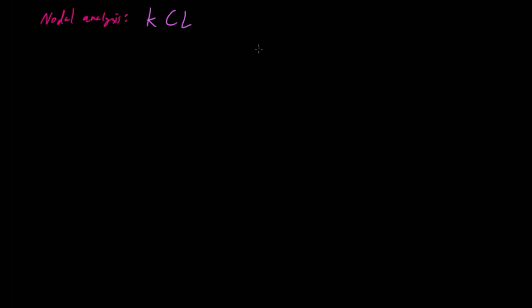What KCL says is that the sum of all the currents entering a node has to be zero. If you summed up all the current that went into any node in the circuit, it would have to equal the sum of all the current flowing out of that node.